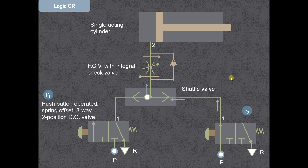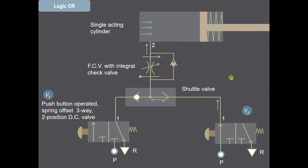As you can see, the air is admitted and there will be compression of the spring while the piston advances. This is the forward stroke obtained in this particular case. Either valve V1 or V2 is operated, and then only we will get this operation. Even though V1 is not operated, there is no problem — we get the operation of the circuit. Operation of either valve V1 or valve V2 is required, and therefore this is known as the logic OR circuit.